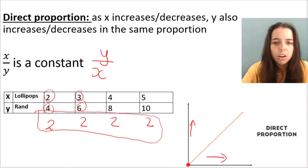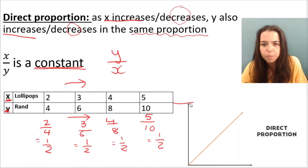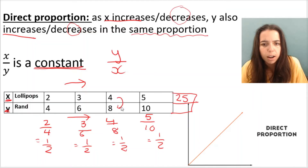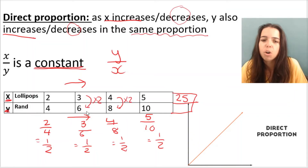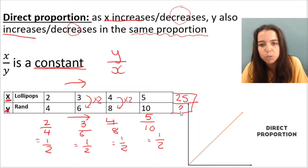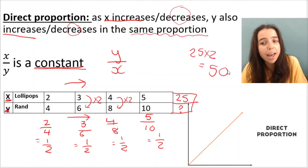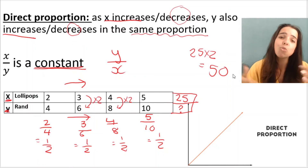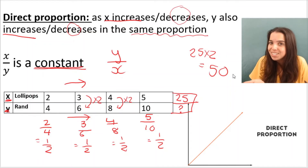So if I had to ask you: I'm going to sell 25 lollipops — how much rand must I make? How did I get from 4 to 8? I times by 2. How did I get from 3 to 6? I times by 2. Or: 6 divided by 3 is a half, 8 divided by 4 is a half — remember, it's a constant. So how would I get the amount of rand for 25 lollipops? You would say 25 times 2, so I would have 50 rand if I sold 25 lollipops. You could do the same for any lollipop or rand value — you know the constant, so you can work it out.